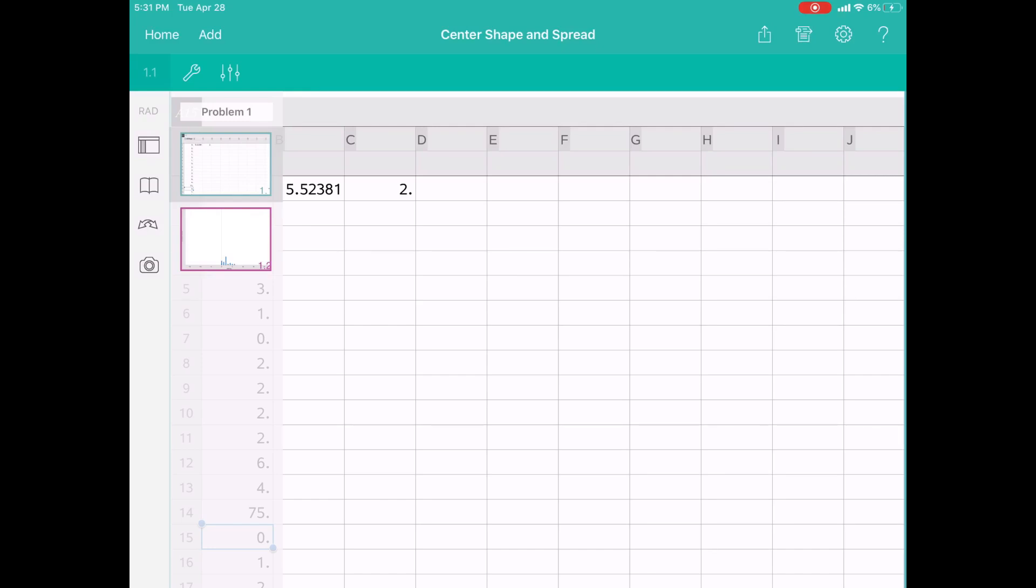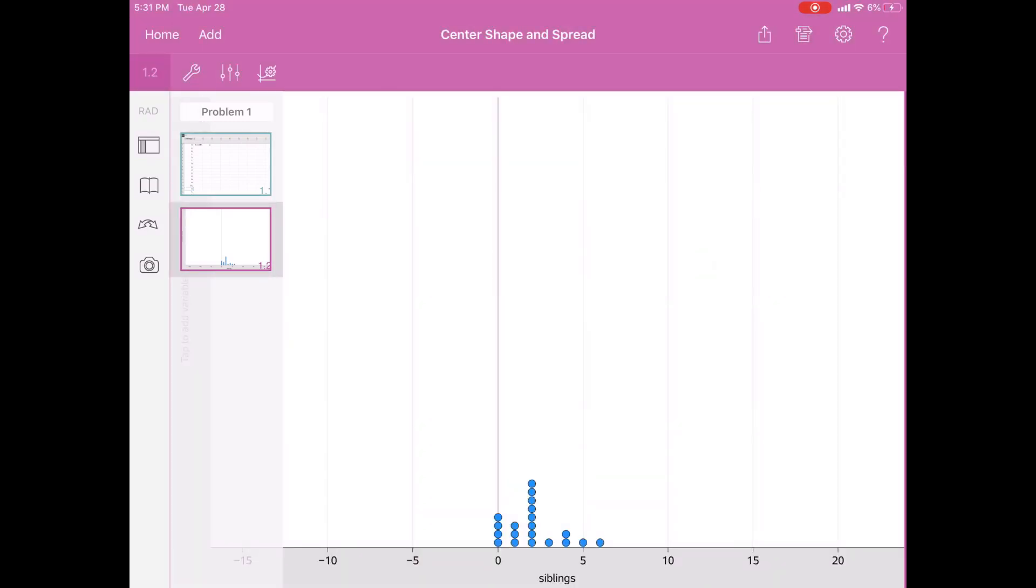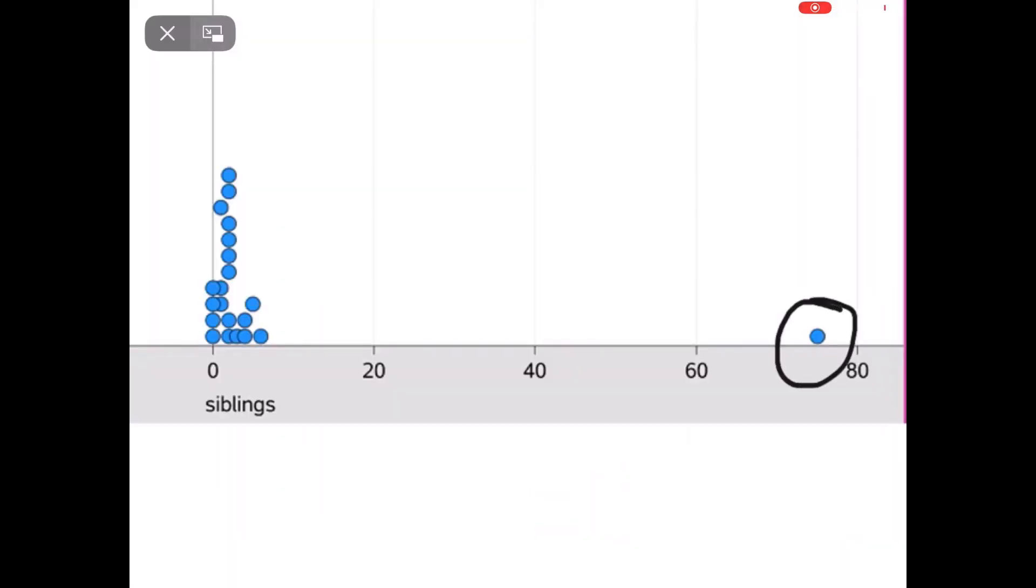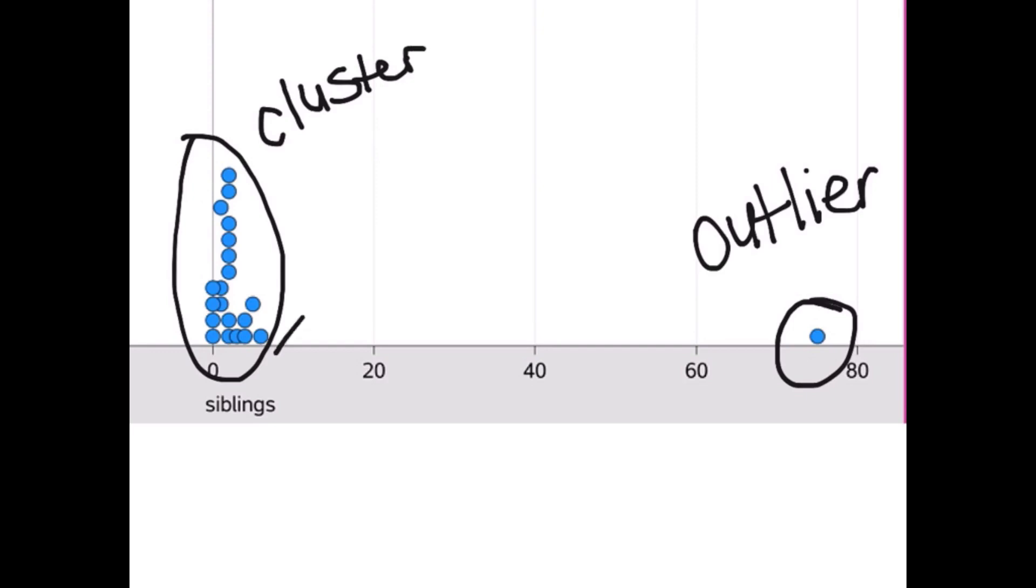Now let's switch to the dot plot and zoom out to see how it was affected. The 75 has created a point far away from my other points, making it an outlier. All of the other points clumped up together is called a cluster, and the big hole in between the two is called a gap.